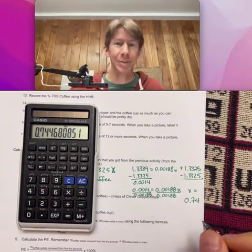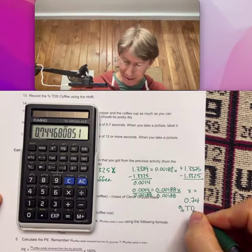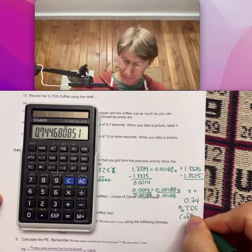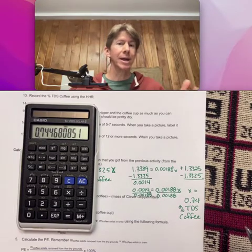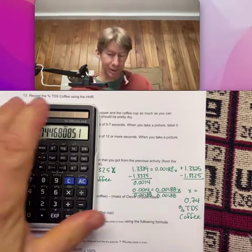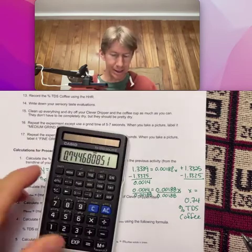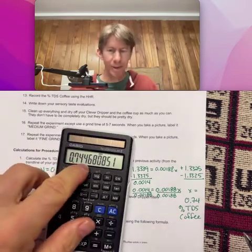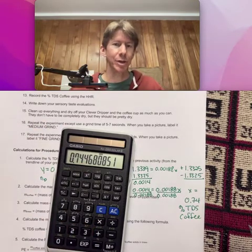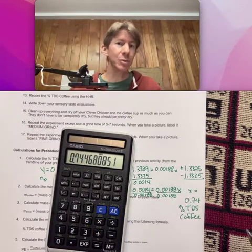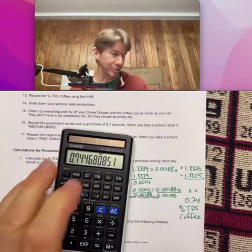So I divide that by 0.00188. And I get 0.74. And that is my percent TDS coffee. My percent total dissolved solids of my coffee estimated using the handheld refractometer. And I went with 0.74. The next digit was a 4. Had it been a 5, I would have rounded the 0.74 up to 0.75. We will follow basic rounding rules here.